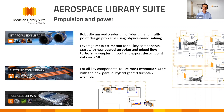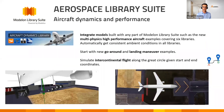In the propulsion and power vertical, new models are available to estimate not only performance but also the mass and geometry of components in the Jet Propulsion Library and Electrification Library. You can use these to predict the size and masses of components. In the Jet Propulsion Library we have implemented workflows for multi-point design, enabled by the steady state physics-based solving technology mentioned earlier.